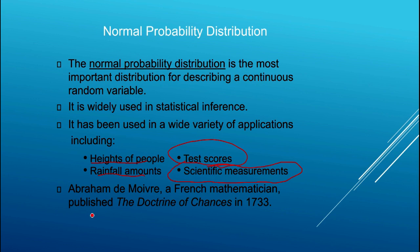De Moivre, a French mathematician, is credited with deriving the normal distribution in 1733. I believe it's also true that he was an orphan. I've read several textbooks on the history of mathematics, and his story is really interesting because he got off to a pretty rough start in life before becoming a very well-known and accomplished mathematician.